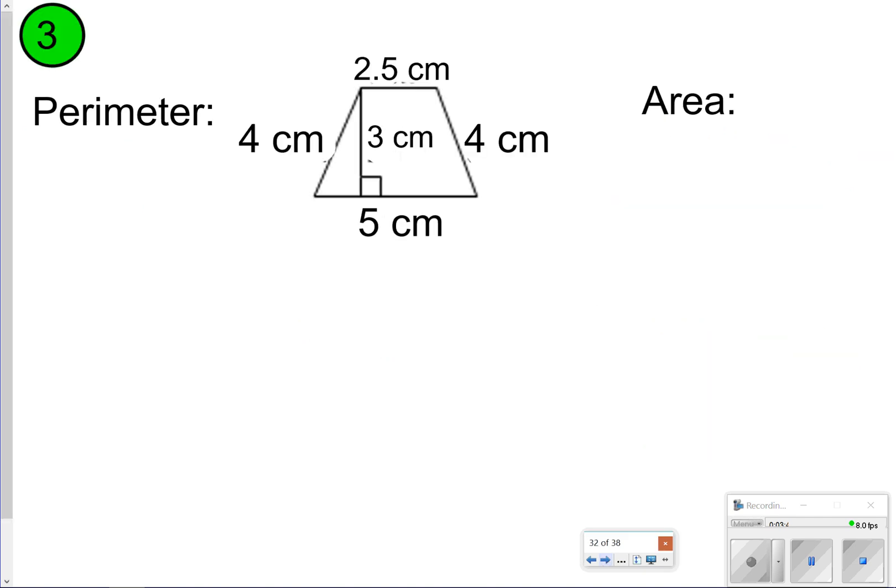Let's see if you can try one. You're going to pause the video and try this one on your own. Once you're done, click play to check your work. All right, so perimeter—we're going to be adding all the outer edges: 5 plus 4 plus 2.5 plus 4. For that one you should get 15.5 centimeters.